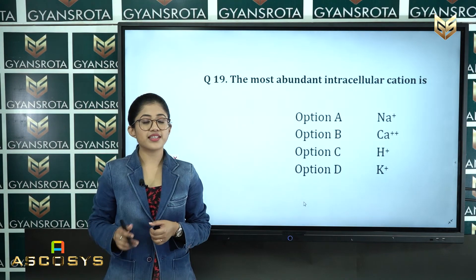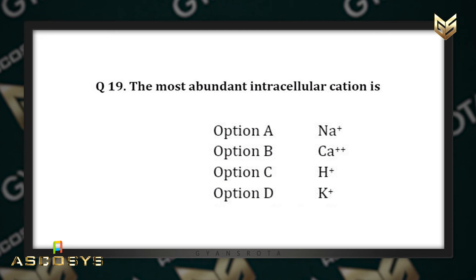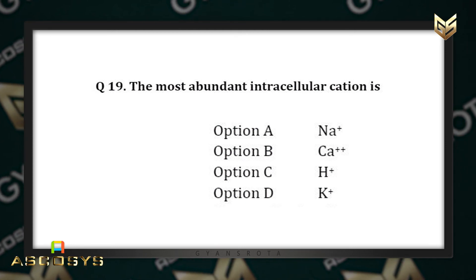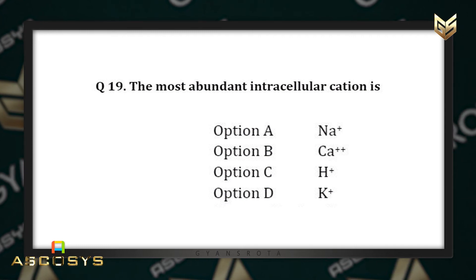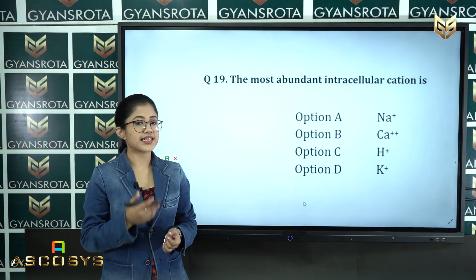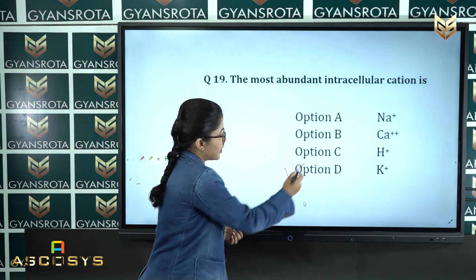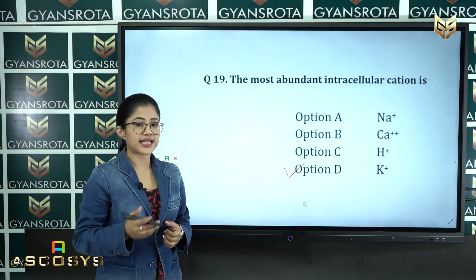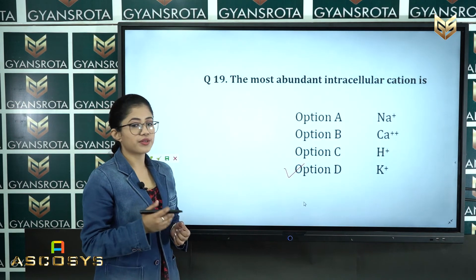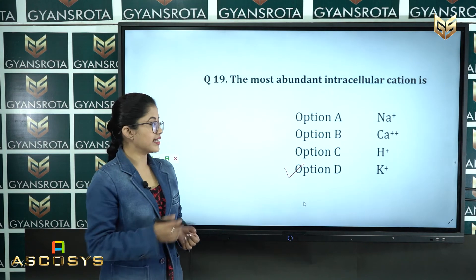Question number nineteen: the most abundant intracellular cation is — option A: sodium, option B: calcium, option C: hydrogen, option D: potassium. The correct answer is option D — potassium is the most abundant intracellular cation, whereas sodium is the extracellular cation.